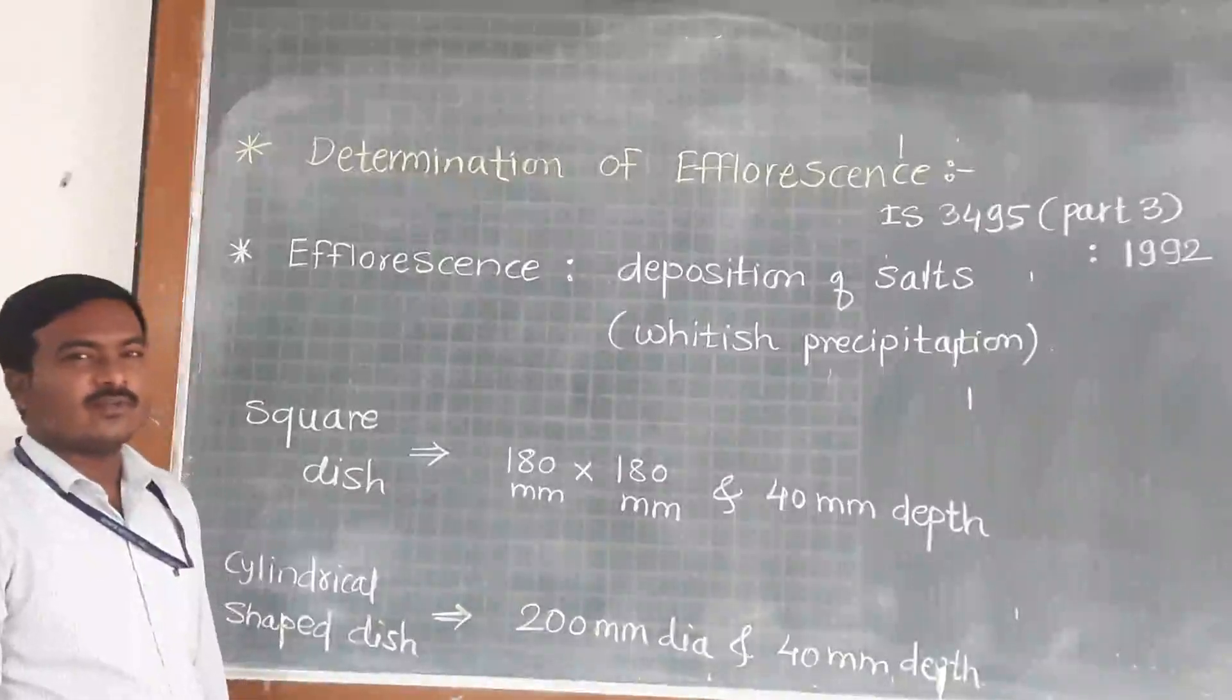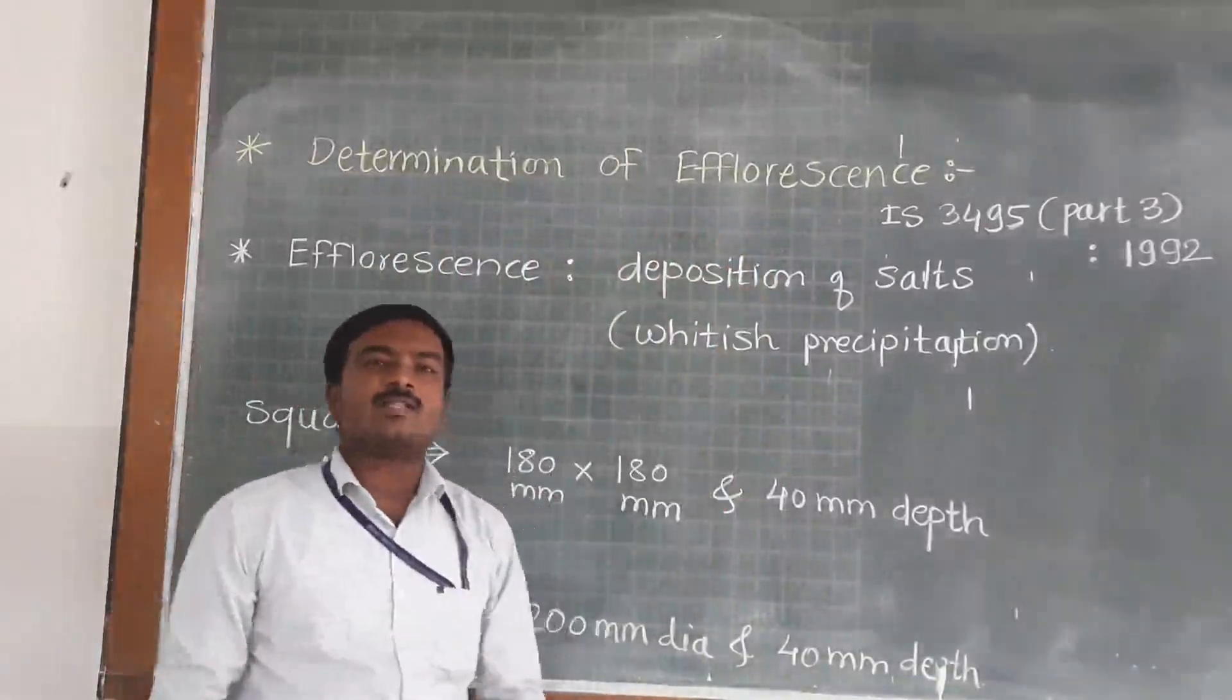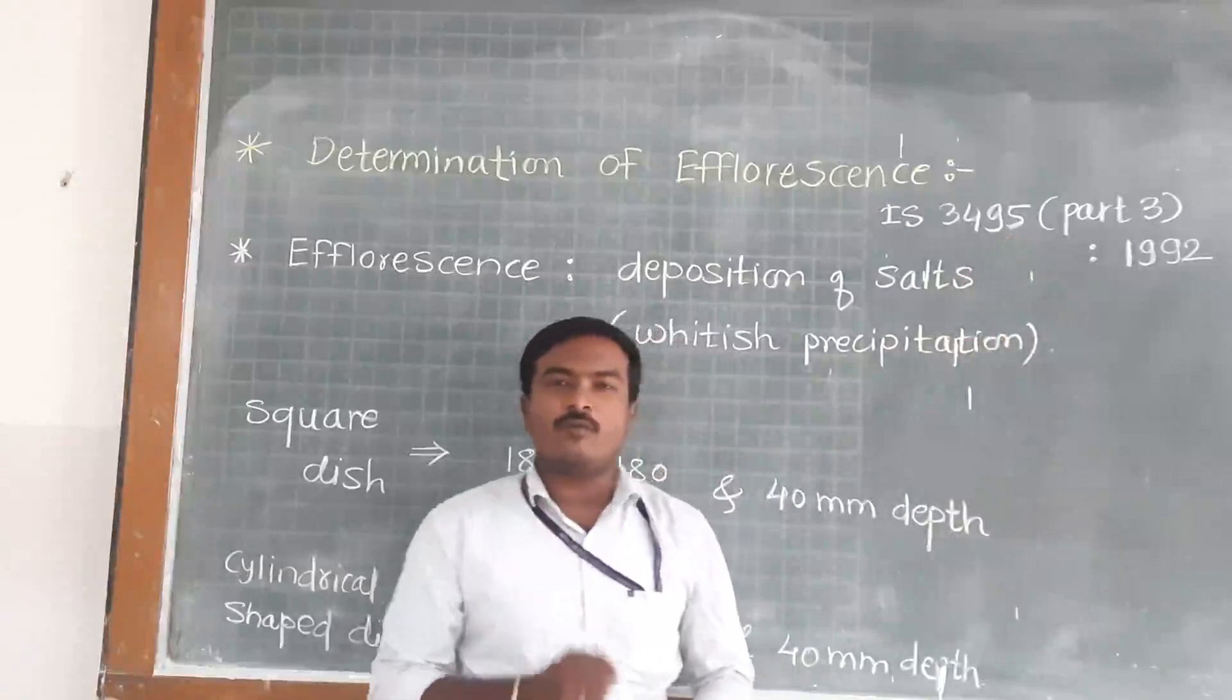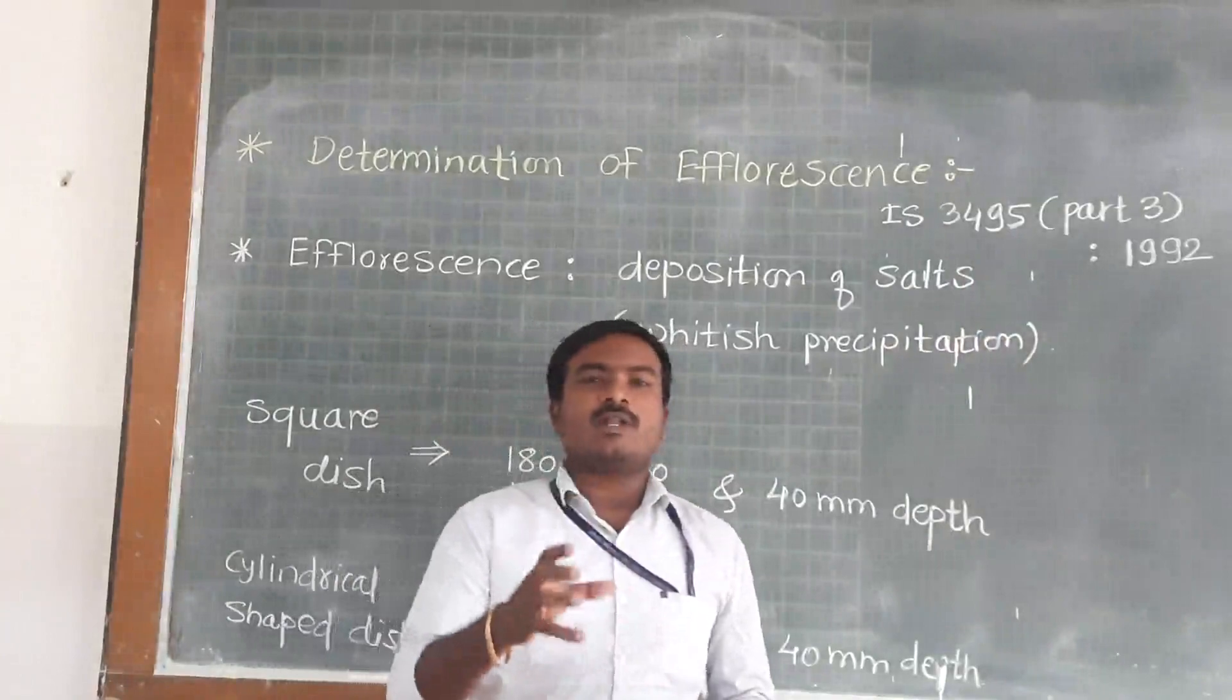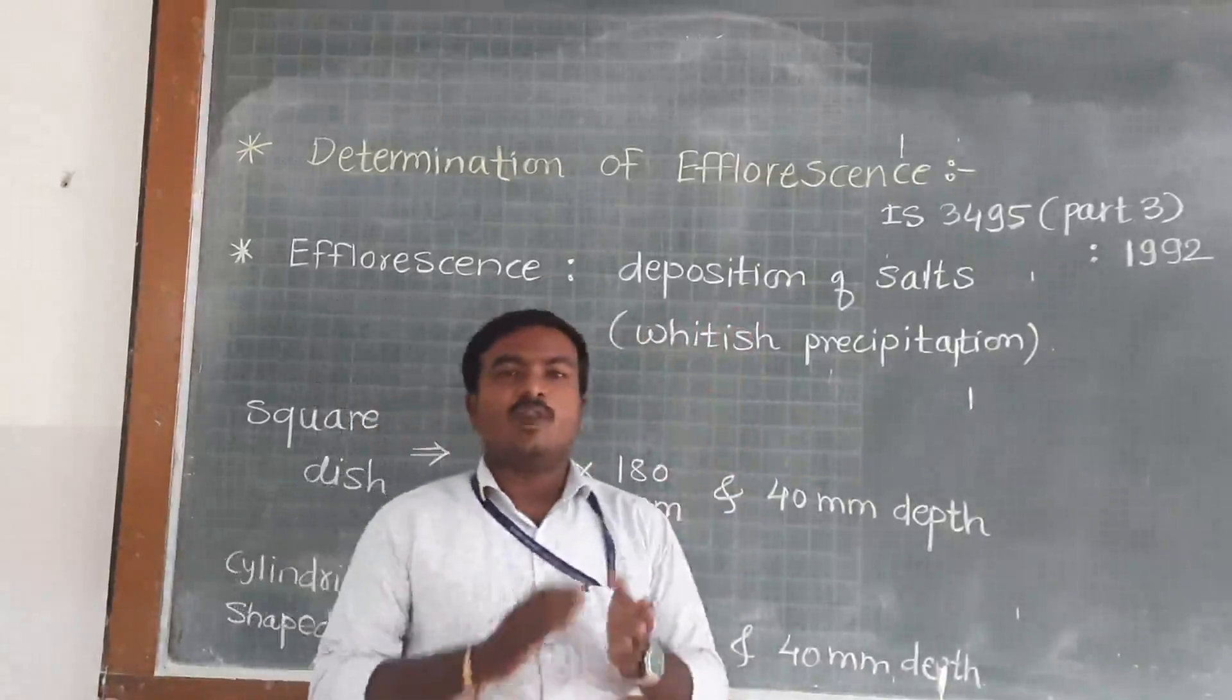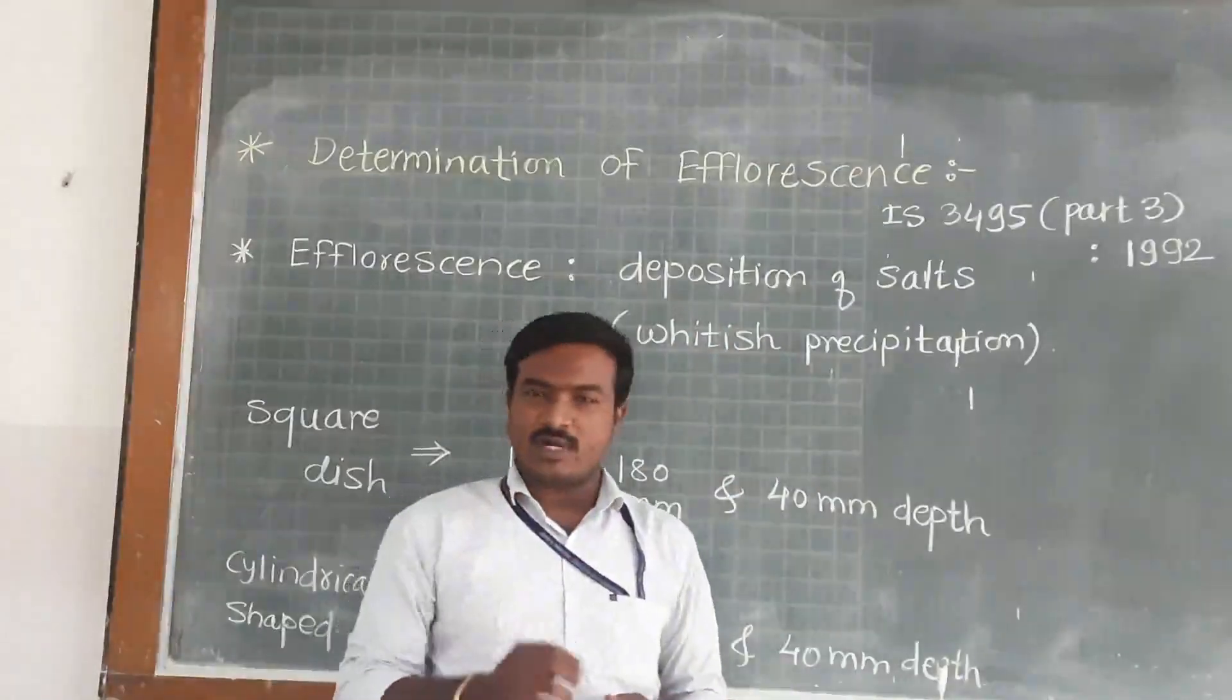Welcome all. Today we will see how to determine the efflorescence on bricks. The IS code used for this is IS 3492 Part 3, 1992. First, we will see what efflorescence is. Suppose bricks are submerged in water or water is in contact with bricks, then whitish precipitation or salts are deposited on the surface of bricks. That whitish precipitation or deposition of salts is called efflorescence.